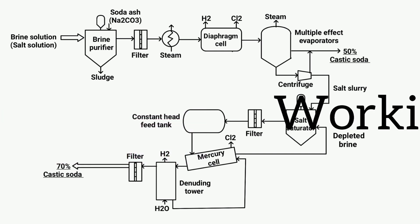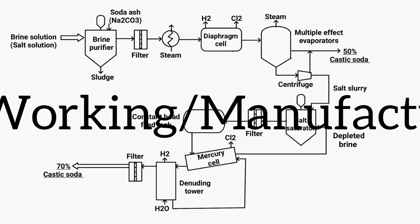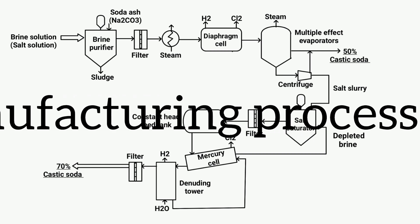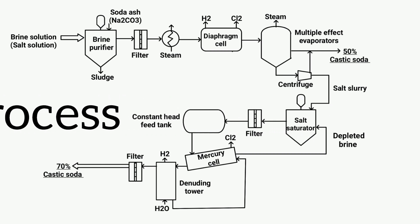Now, we will understand the working process of caustic soda production through step-by-step flow sheet diagram. Now you have to watch the video carefully. First, the brine solution is sent to the brine purifier reactor equipped with an agitator for mixing. In this reactor,